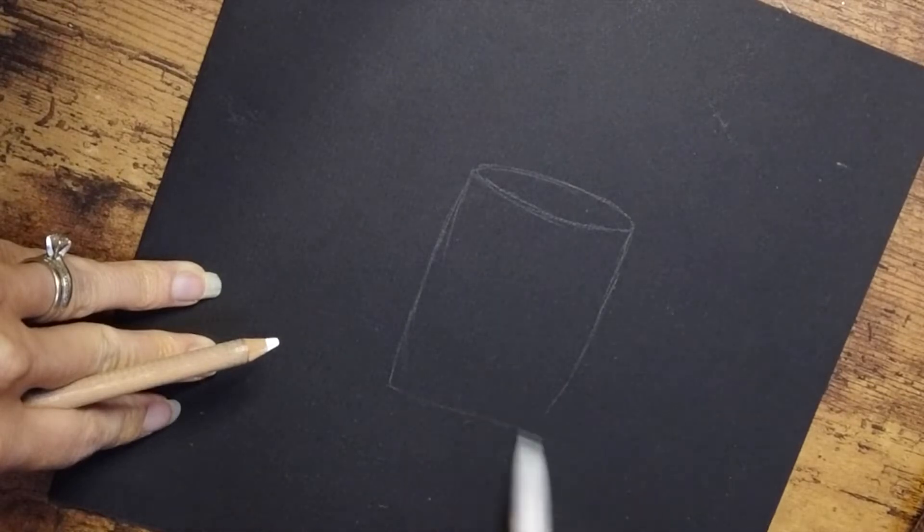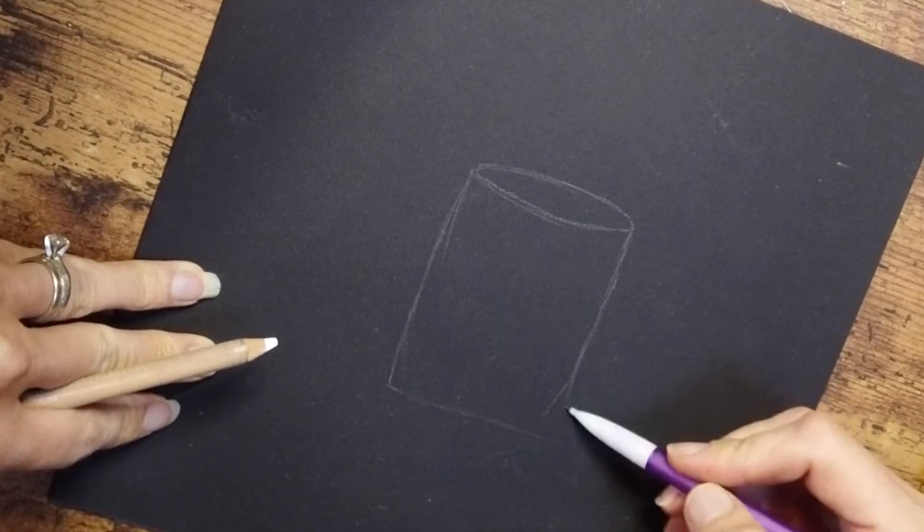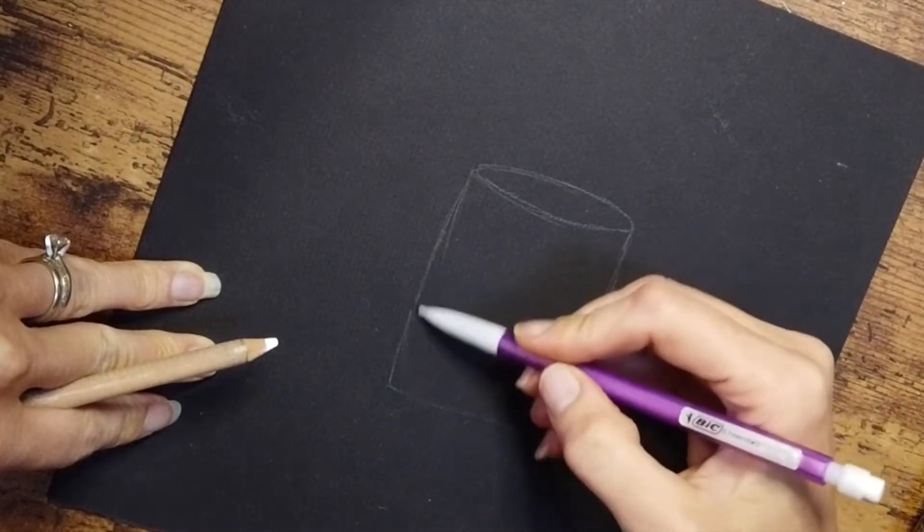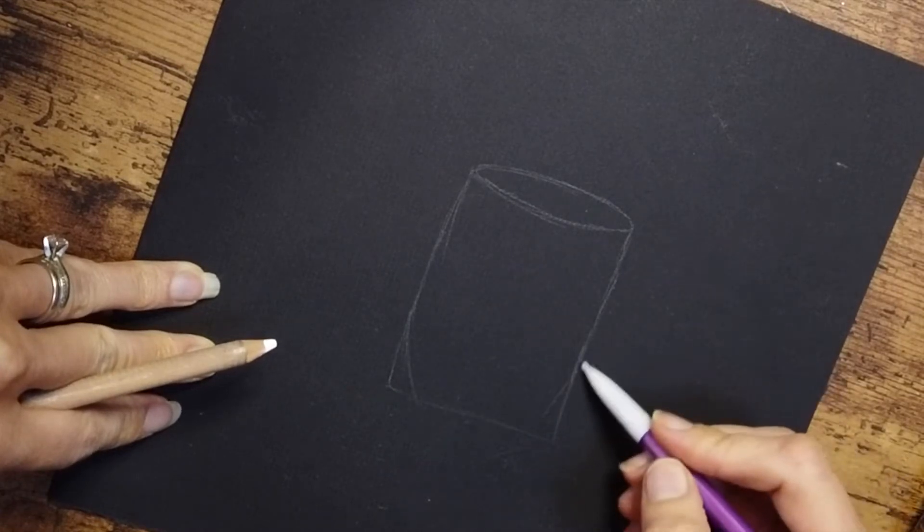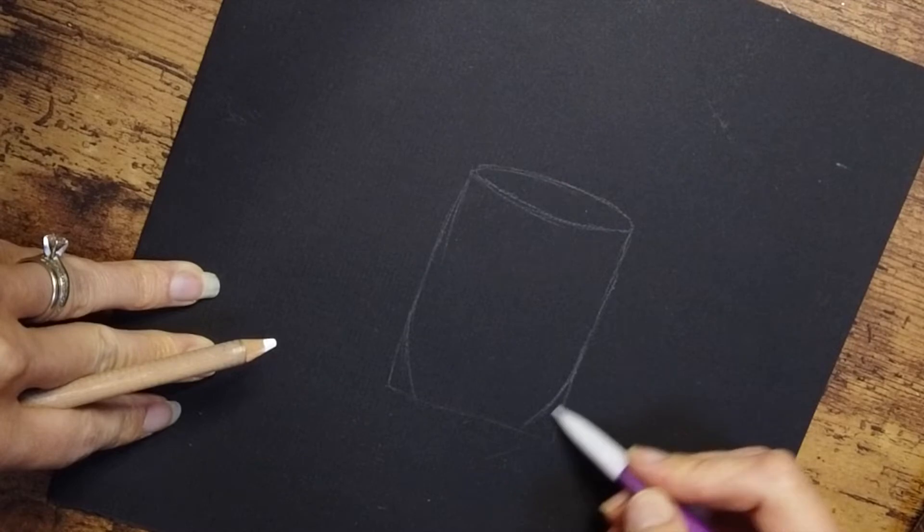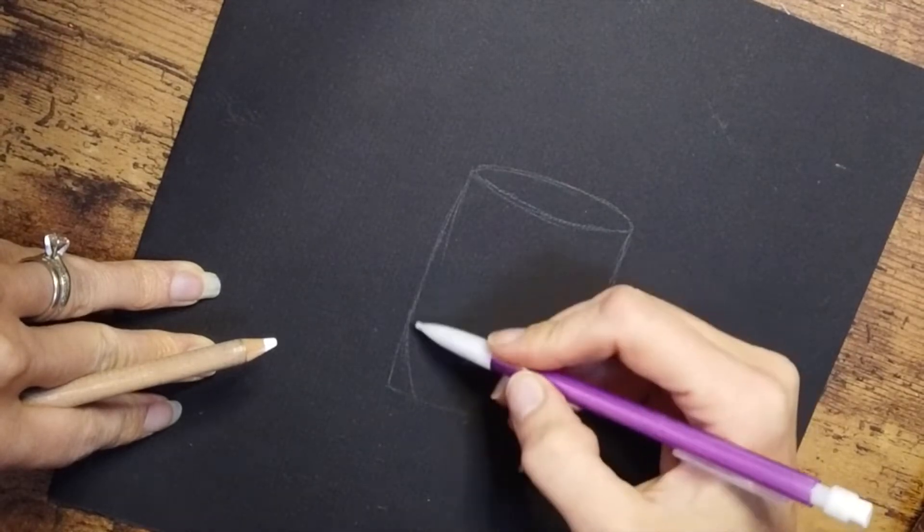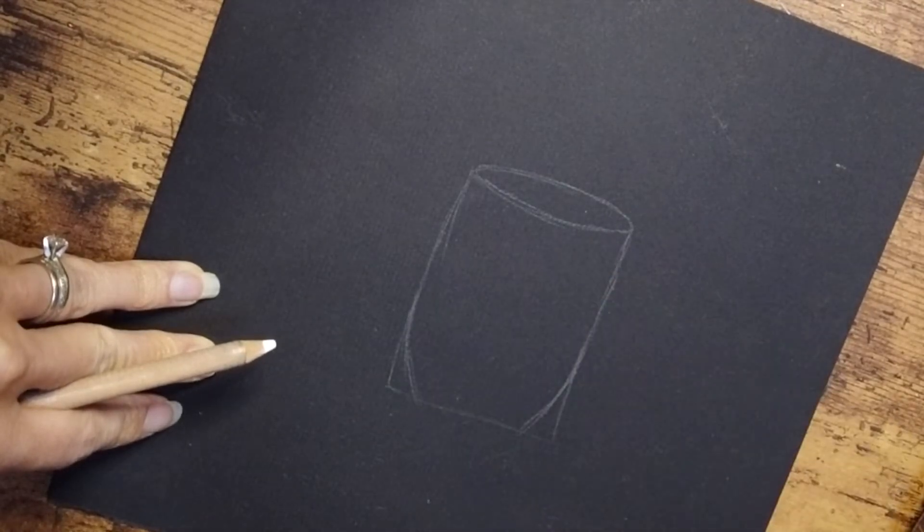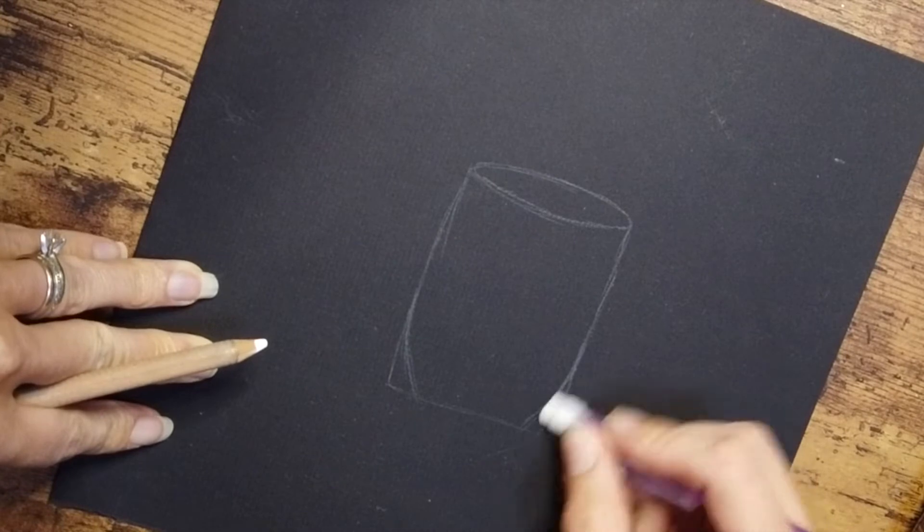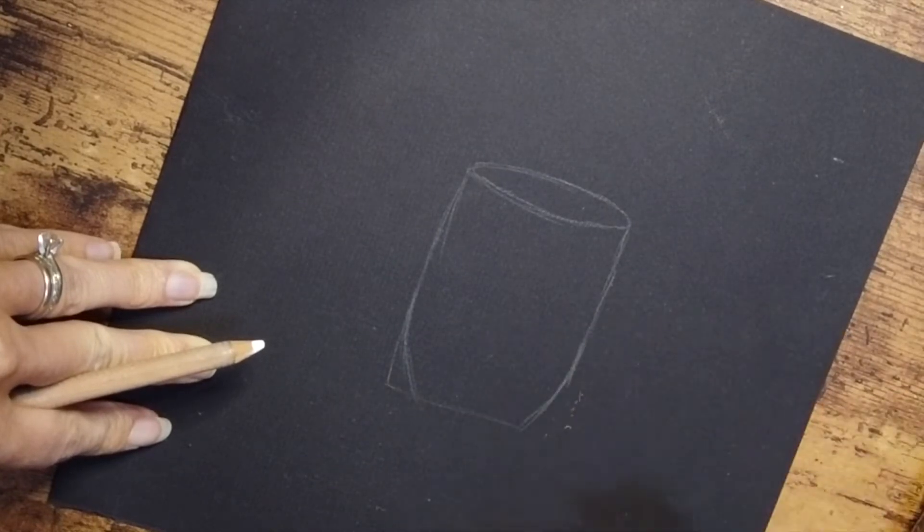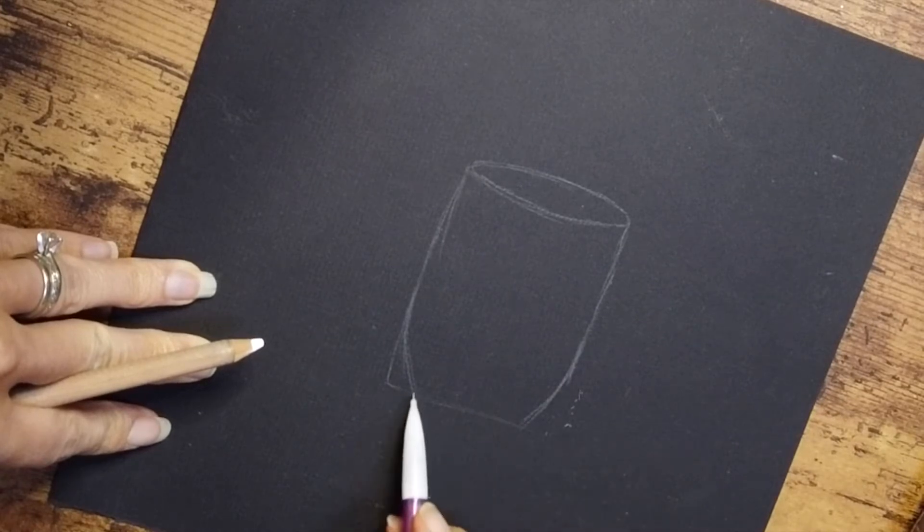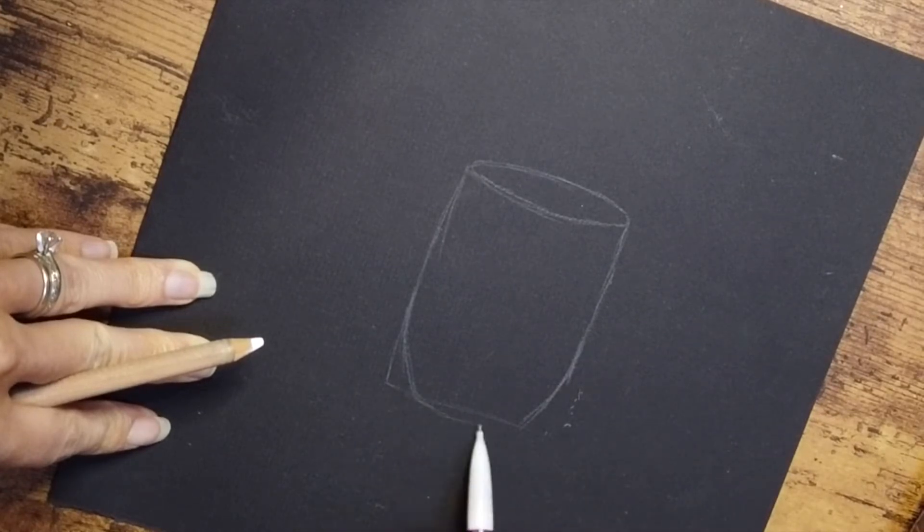Then just kind of round out those corners at the bottom, so almost like you're drawing a rectangle, right? And then you can erase the corners out and round the bottom of this glass as well. So it should just be slightly rounded; it doesn't need to be crazy dramatic or anything.